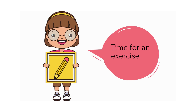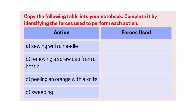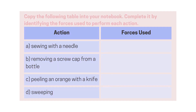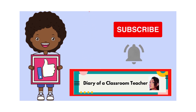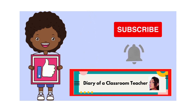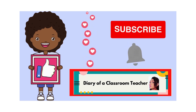Now, before you go, there is an activity for you to do. Here is a table that you can copy into your notebooks. In the first column are some given situations. In the second column, you are to identify the forces being used to perform each action. As you complete this task, here is a question to ponder over: can more than one force be applied in a given situation? When you get to class, you can share your thoughts with your classmates and with your teacher. Thank you for watching this video boys and girls. Remember to stay subscribed to the channel to get notified about upcoming videos, and don't forget to like and share the video with your friends and family. See you soon in the next video.